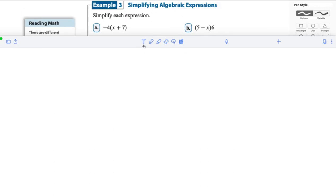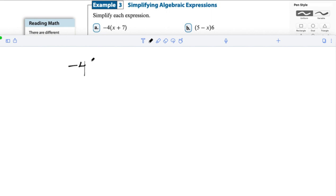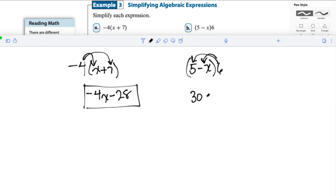So in this example is where we see that this is the only way we can simplify. In example 3, you see that we have negative 4 times the quantity of x plus 7. We can't really add x plus 7 because they're two different unlike terms. But we can represent this expression in a different way by using the distributive property. So negative 4 times x is negative 4x. Negative 4 times 7 is a negative 28. And that's our final answer. Over here, we can do the same thing with part b. Even though the number outside the parentheses is on the right side, we can still use the distributive property because we are multiplying. 5 times 6 is 30. And 5 times a negative x is negative 6x. And that's our final answer.